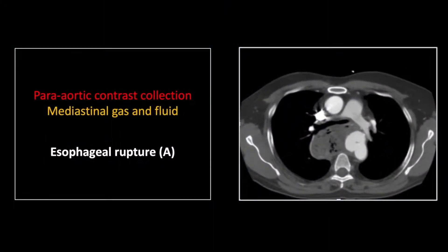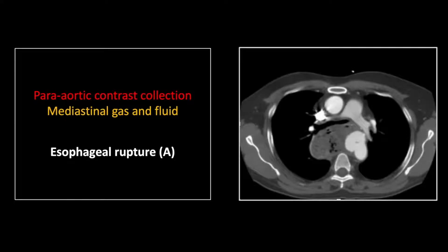Our next case is an esophageal rupture, also associated with an aortic laceration and pseudoaneurysm. You can see the pseudoaneurysm on the anterior and right aspect of the descending thoracic aorta, a little lower than the typical level. There is also a well-circumscribed collection of gas and fluid in the mediastinum. In traumatic esophageal ruptures, rapid tissue expansion causes the soft tissues of the mediastinum to knit together and contain the released gas and fluid.